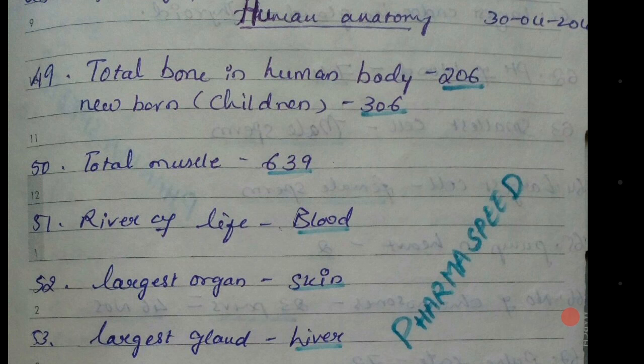Total muscles in our body is 639. Coming to the next: the river of life in our body is blood.